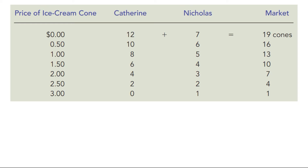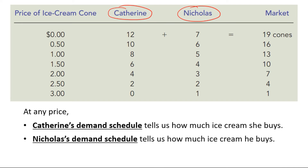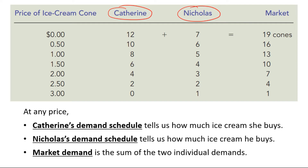The table in this figure shows the demand schedules for ice cream of two individuals in the market: Katherine and Nicholas. At any price, Katherine's demand schedule tells us how much ice cream she buys. Nicholas's demand schedule tells us how much ice cream he buys. And finally, market demand is the sum of two individual demands.